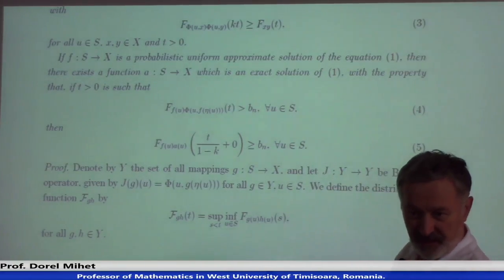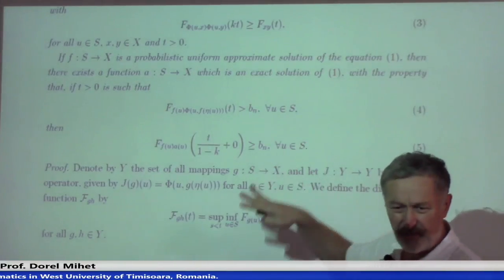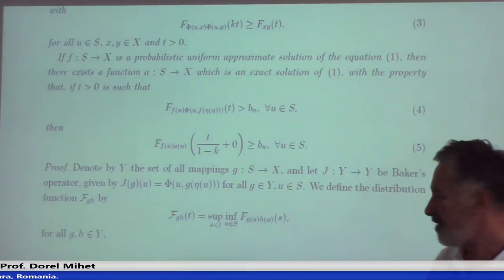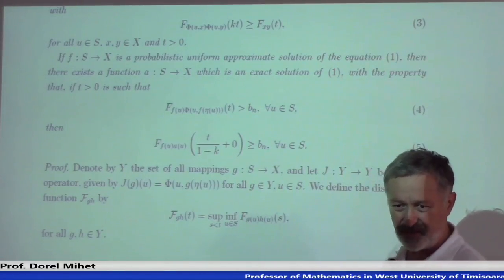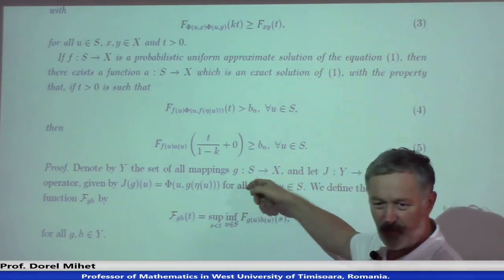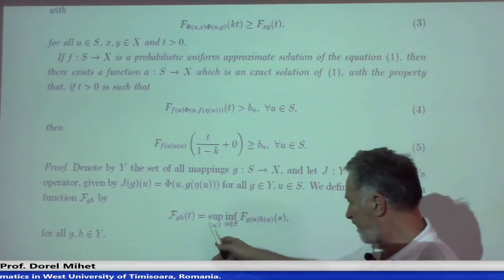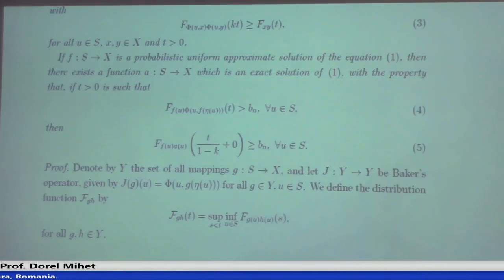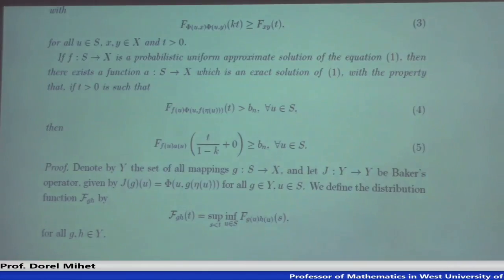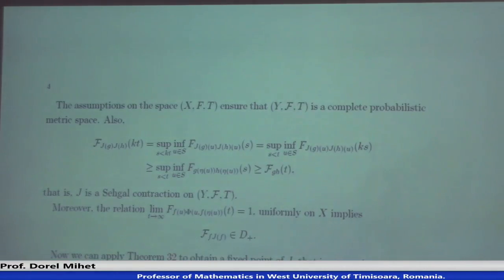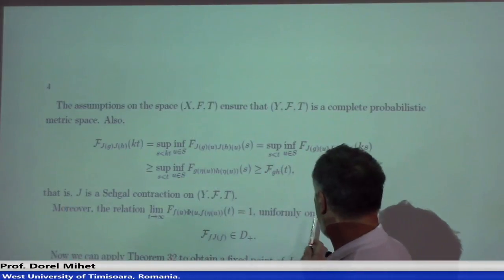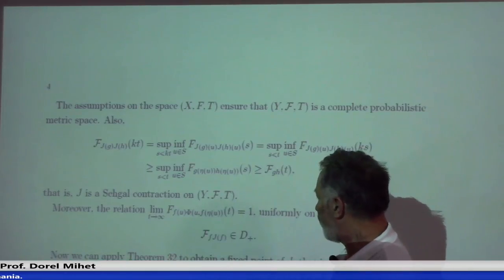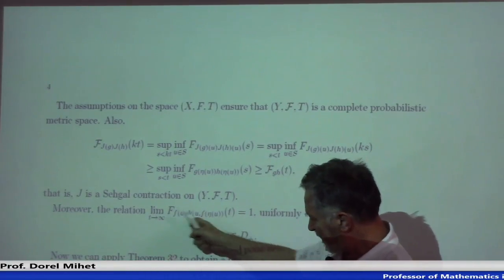I left you as an exercise something similar. Here, G was defined not from X. Here is the definition — I take it directly without explanations. This is indeed a probabilistic metric on J, on Y. And here appears the condition of tending to one uniformly on S.